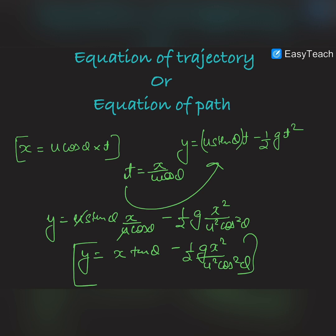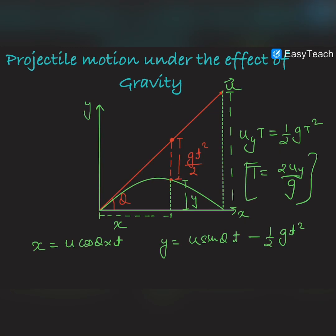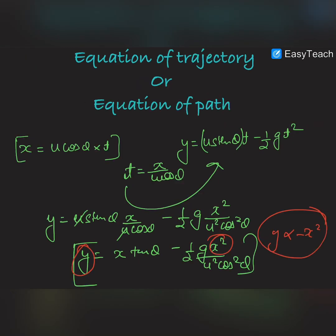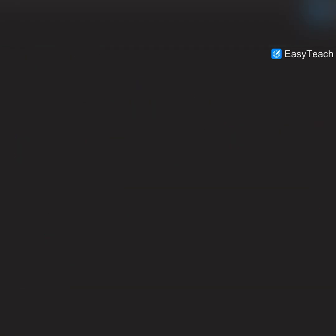Concentrating on the terms, y is proportional to −x². This is a downward-opening parabola. So obviously, projectile motion follows a downward-opening parabolic path.